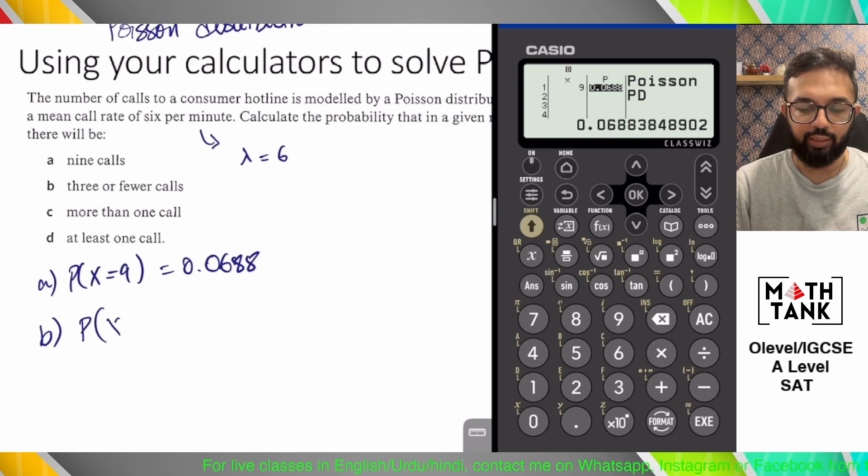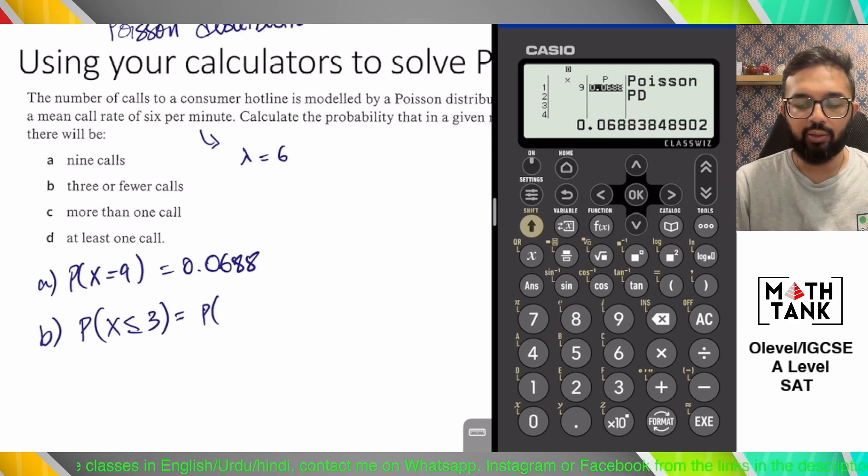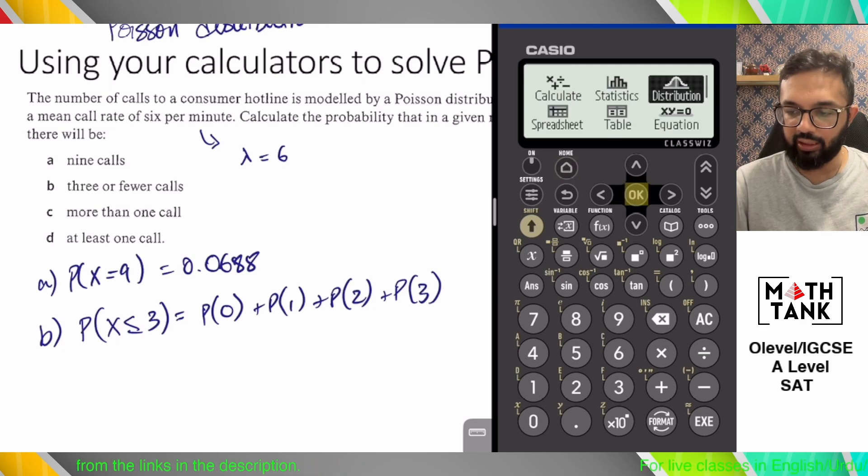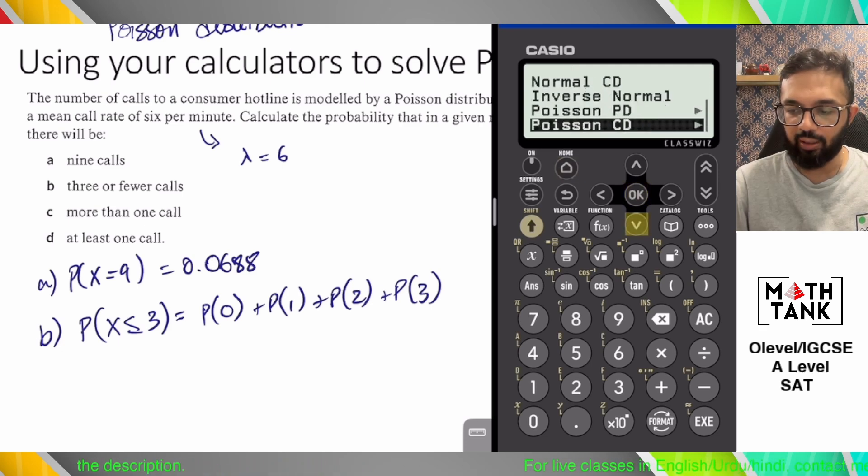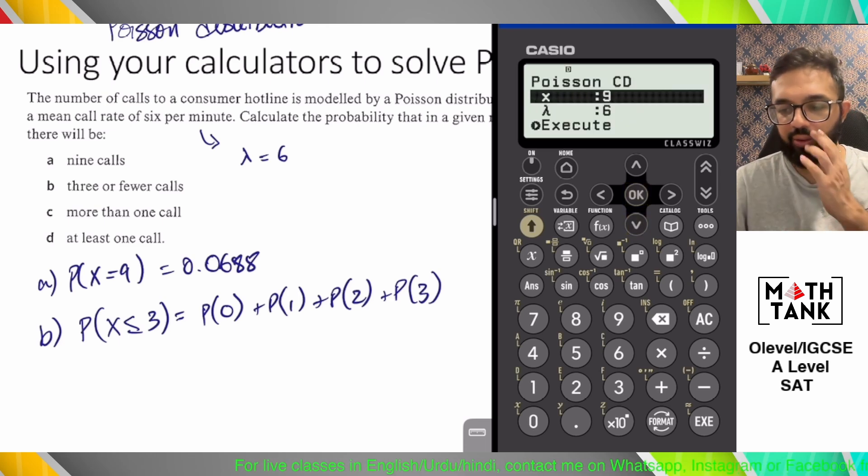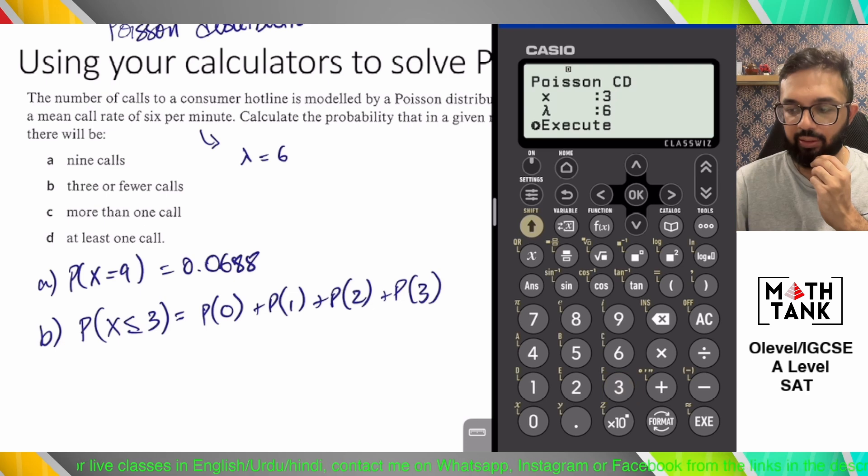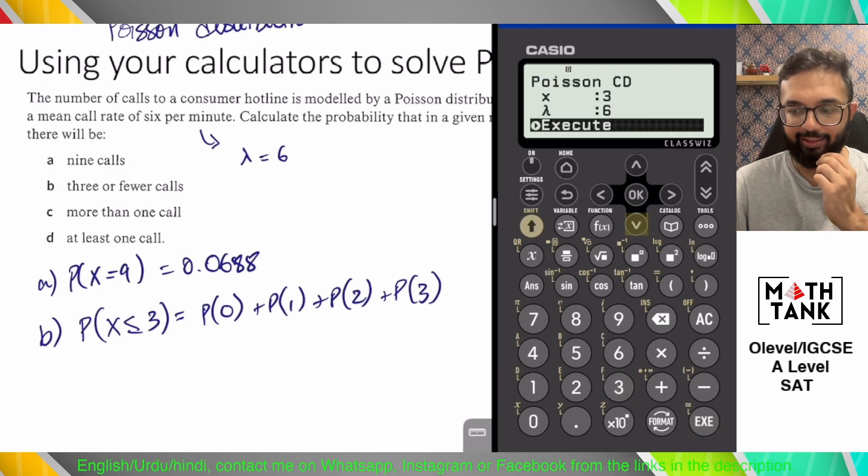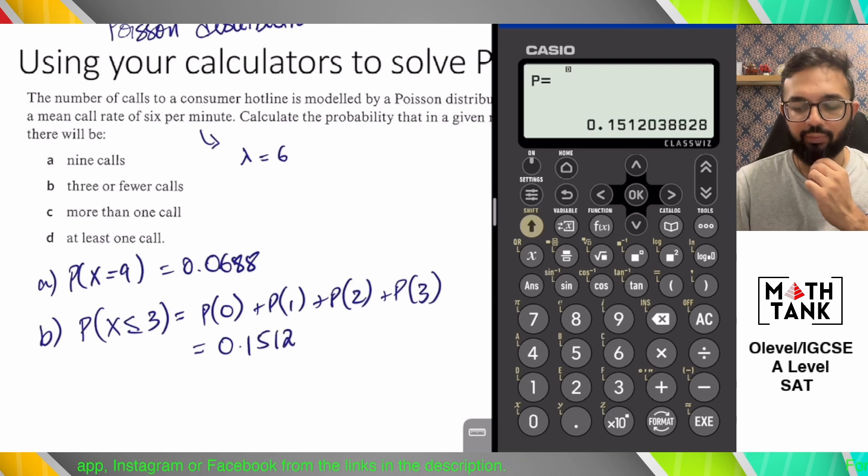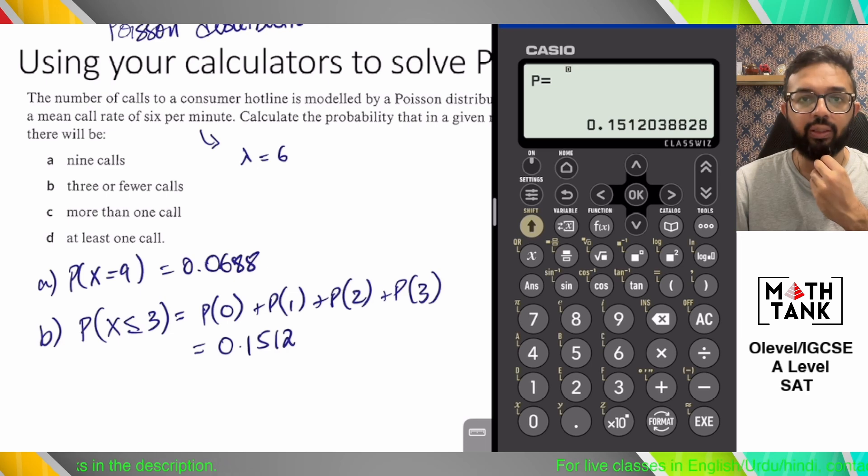3 or fewer calls, so x is less than or equal to 3. I want to calculate the probability of 0, 1, 2, and 3. I could make that effort and plug in the formula and everything, but my calculator allows me to do this directly. This time I use Poisson CD. I will accumulate up to a number. So it's not the answer for one of these numbers, but 0.1512 is the answer for all of these numbers.